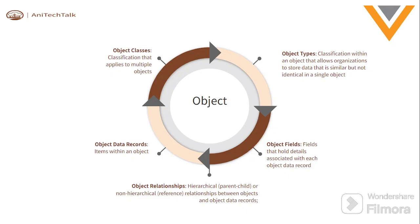When you have two object types, some fields are very similar but a few fields need to be created specifically based on that object type. Now, object data records are the items within an object — when you click on a product and open the record, the data you see is the object data record. Object fields are the fields that hold details associated with each object data record. These could be a picklist type field, a date type field, or a text type field. There are several field types available for objects.